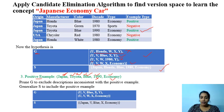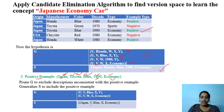The last hypothesis, U, V, W, X Economy: Economy matches and remaining attributes have variables, so it accepts the positive instance. After seeing the third instance, the general concepts are: (U, V, Blue, X, Y) and (U, V, W, X Economy). Checking with the specialized concept S: Honda and Toyota don't match, so we generalize V. 1980 and 1990 both give positive examples, so we generalize the decade attribute to X. Economy matches, so our updated G and S are obtained.